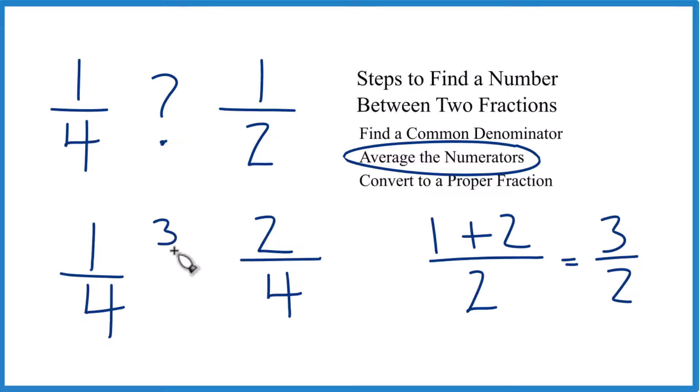So we end up with 3 halves over 4. That's the number that's between 1/4 and 2/4, or you could say 1/4 and 1/2. This is a complex fraction though. So let's change this to a proper fraction.